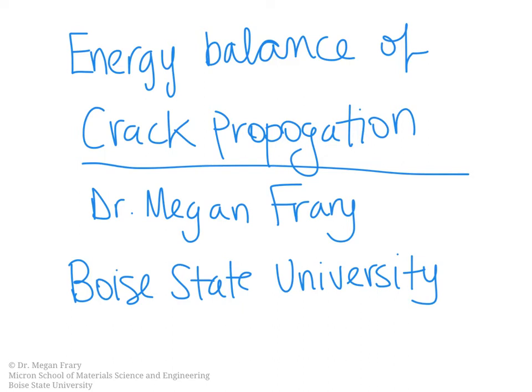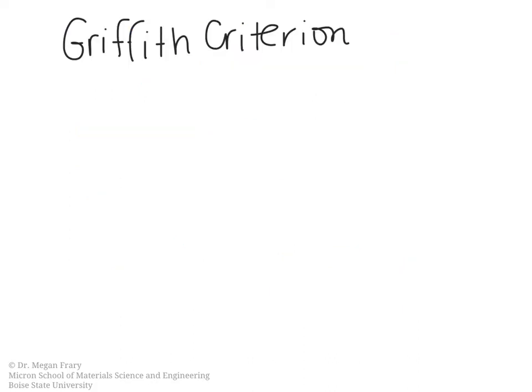In this video, we're going to consider the energy balance of crack propagation and how we arrive at the fracture toughness as a material property. This thermodynamic argument for the energy balance of crack propagation is attributed to Griffith and is usually known as the Griffith criterion. In this case, we have a thermodynamic energy balance between two competing energies which arise during crack propagation.